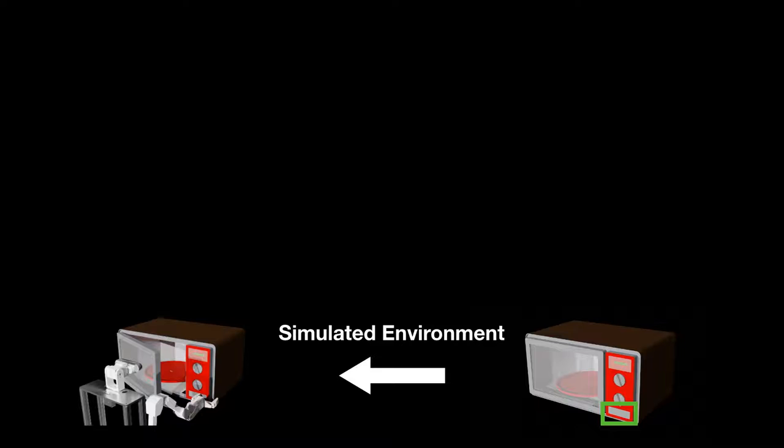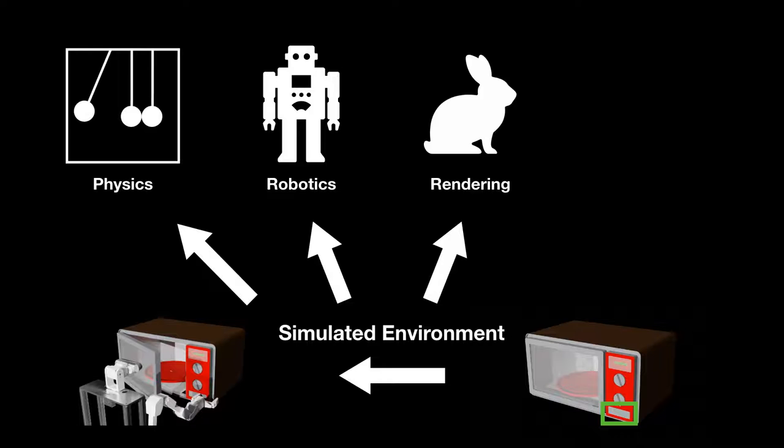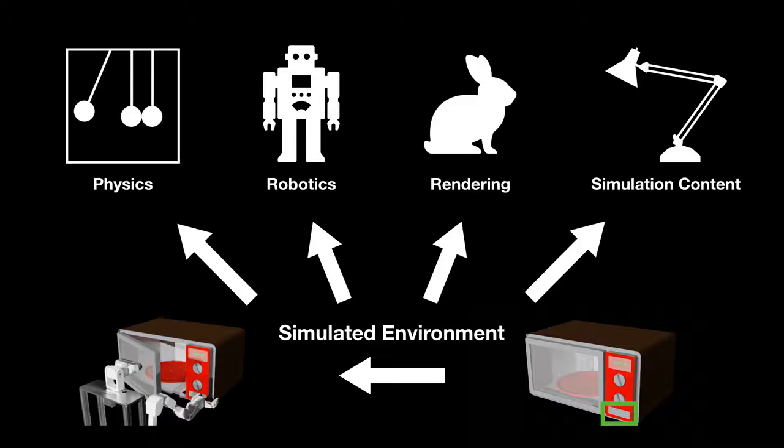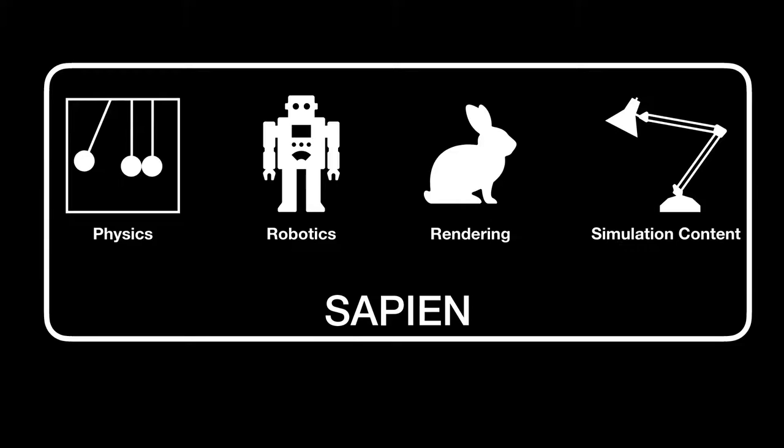These aspects include physical simulation, robotics integration, realistic rendering, and simulation content such as robot models and object models like the microwave here. Our work, Sapien, incorporates all these aspects, thus we provide a platform to study vision and manipulation together.